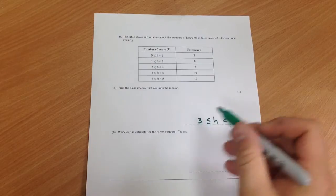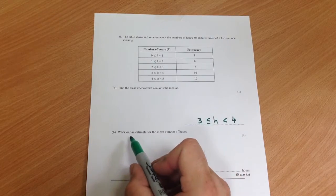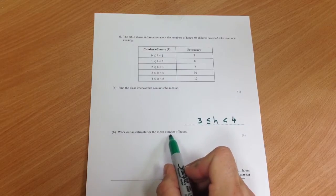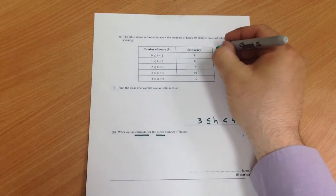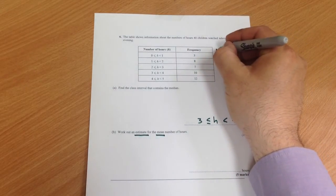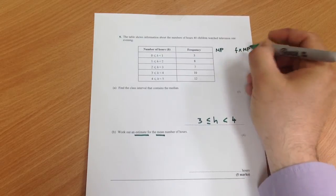That's only worth one mark though, so this is the part where you get the majority of the marks. Work out an estimate of the mean. So estimate and mean, which means you need to add on 2 extra columns: midpoint and frequency times midpoint.